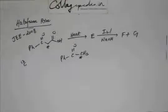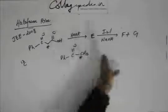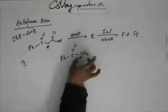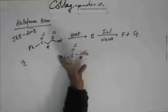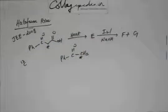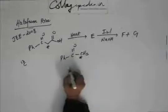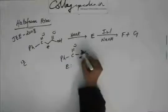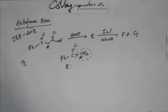This reagent I2/NaOH is a haloform reaction — in particular, this is iodoform because you have taken iodine. In iodoform, the CH3 group goes away as CI3. In the last step, base attacks, CI3 comes out, and OH comes in. After protonation, one of the products will be carboxylic acid. So this part gives you iodoform and this part gives you carboxylic acid — that's how the mechanism works.